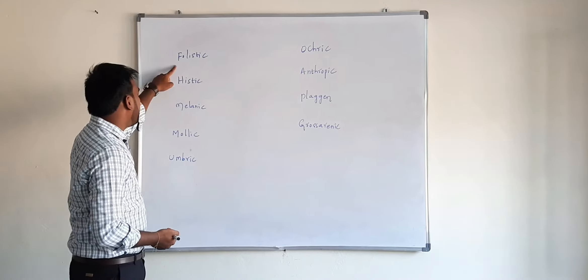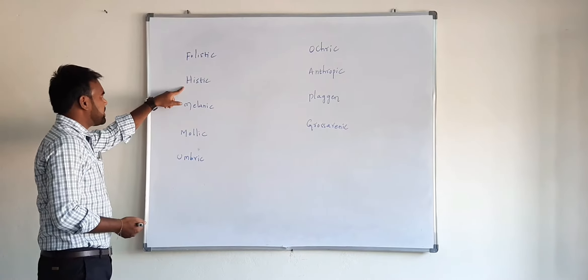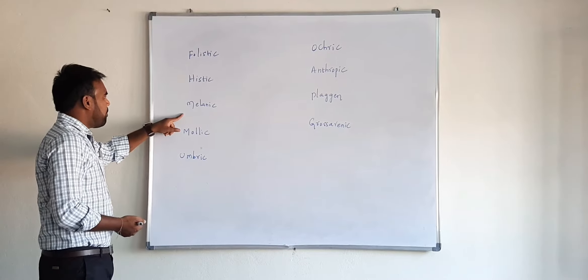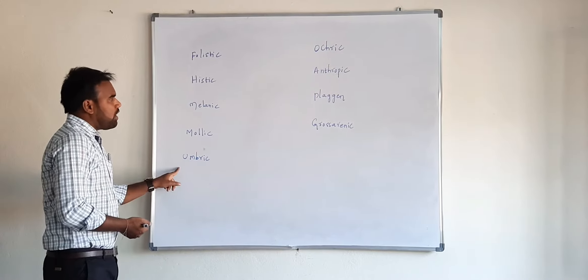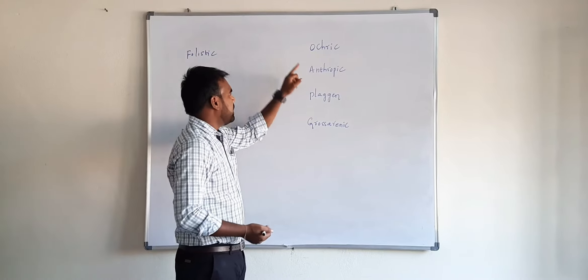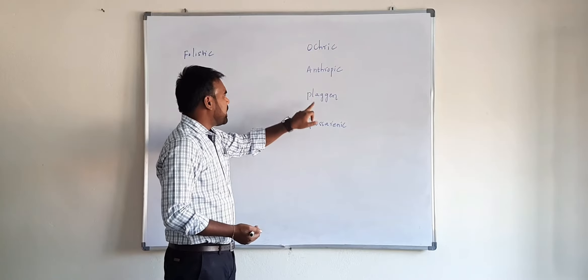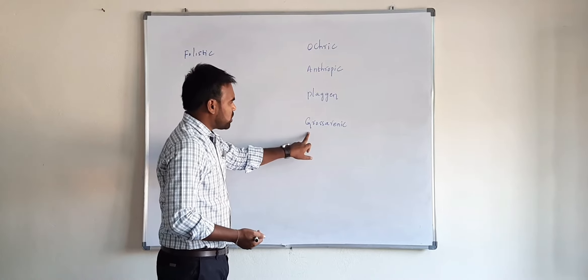There are 9 epipedans. The first one is foistic, second one is histic, melanic, mollic, umbric, ochric, anthropic, plaggen, and grossic. This is the last one.